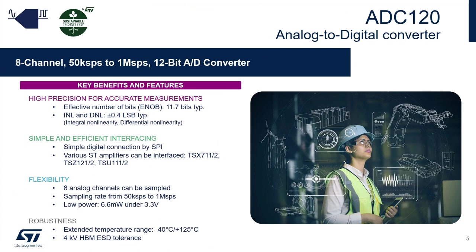ADC120 is a 12-bit analog-to-digital converter with 8 input channels and a sampling rate from 50k to 1 mega sample per second. It has high precision for accurate measurements. The important parameters are the effective number of bits, which is 11.7 bits typical for ADC120, and also the INL and DNL parameters, 0.4 LSB typical. It has a simple digital connection by SPI, and it can be interfaced with various ST amplifiers like TSX-711, TSZ-121, or TSU-111.